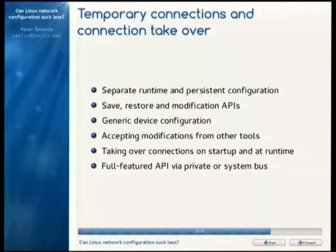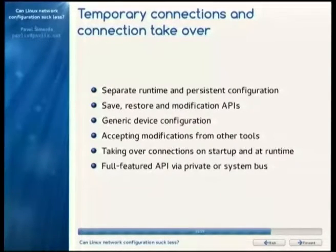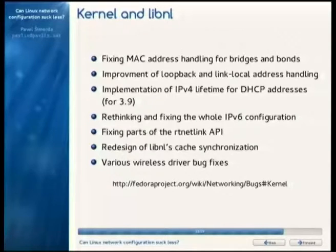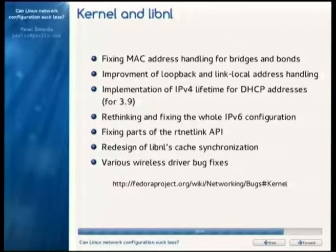We want to support runtime configuration so that you can configure bridges or other things at runtime — it would work as an API for virtualization tools. We also want to pick up runtime configuration from what was configured before NetworkManager started, which is useful when NetworkManager runs in initramfs and is then started again in the real system, taking over existing connections. There's a bunch of kernel things to improve — you can check the networking page on the Fedora wiki.